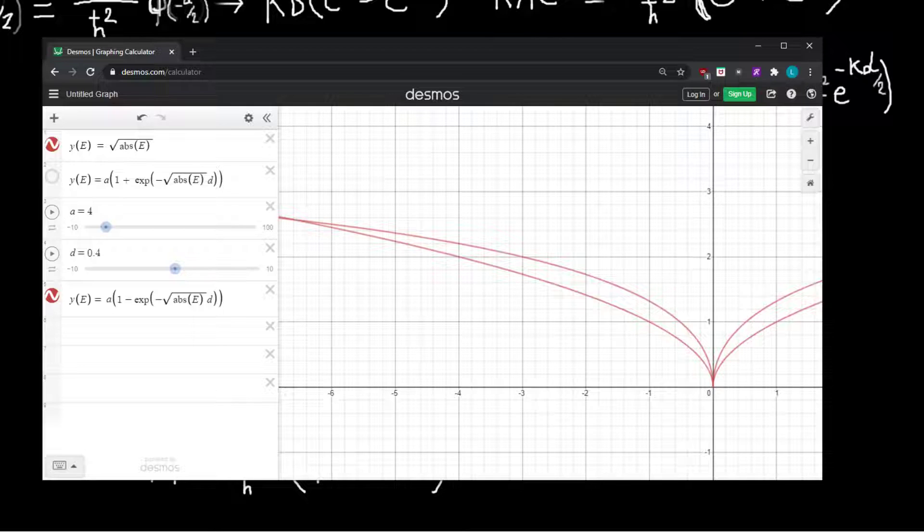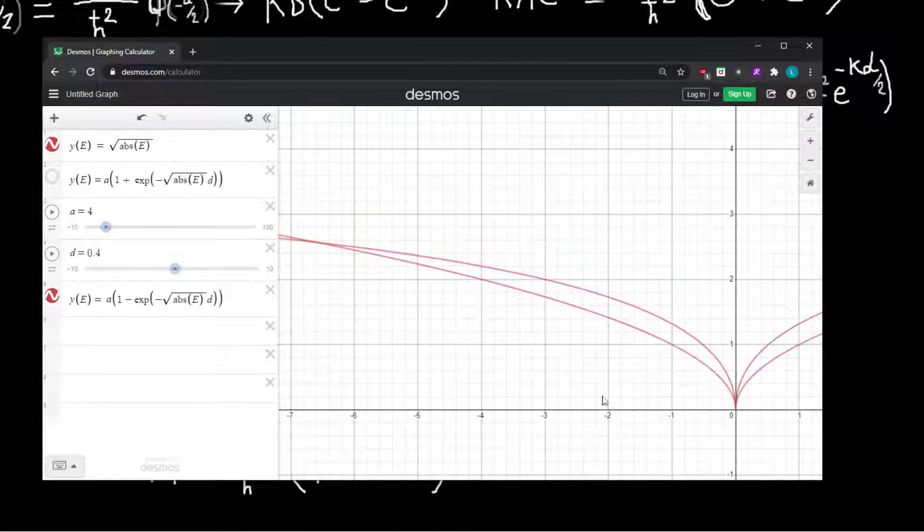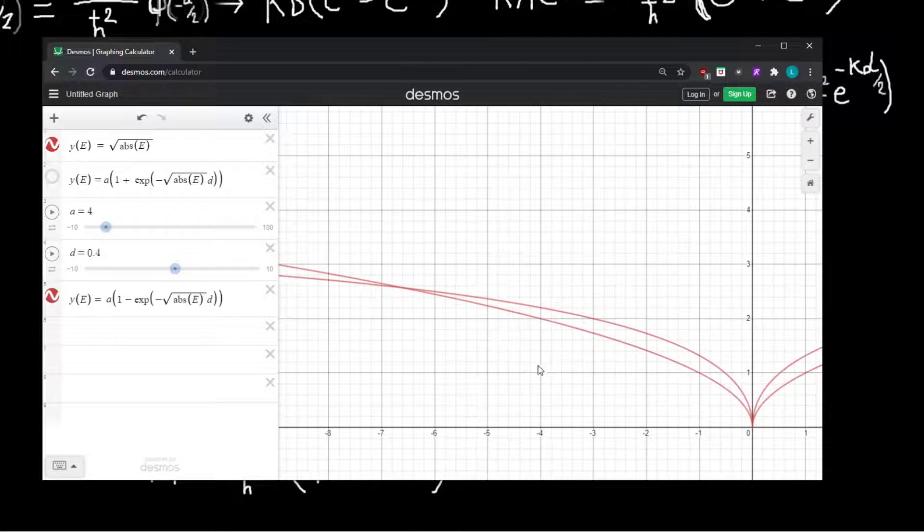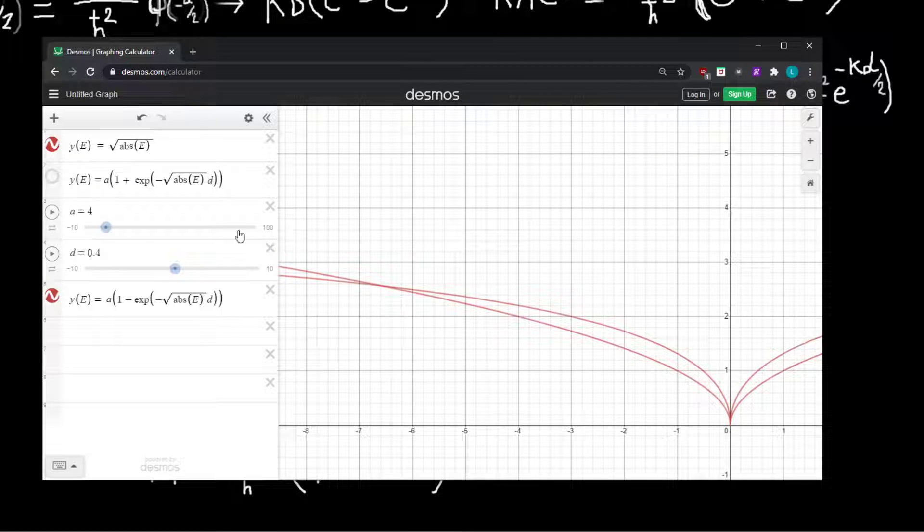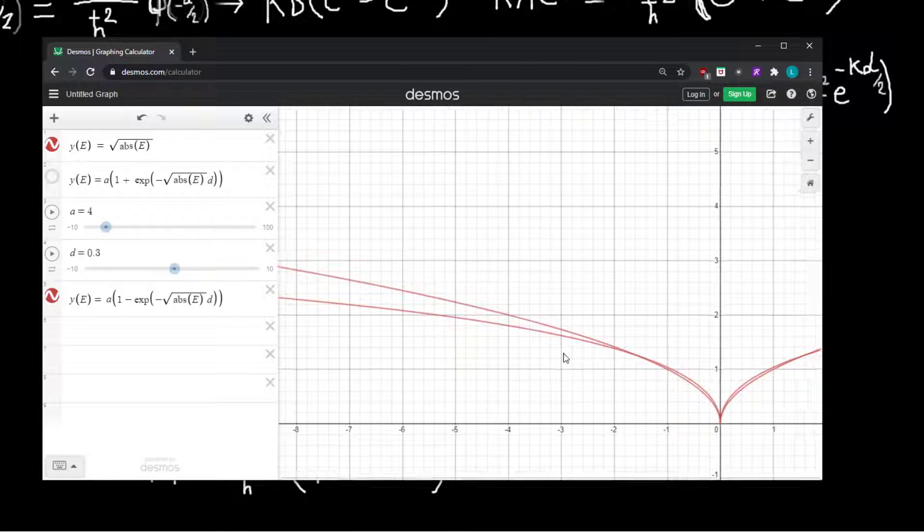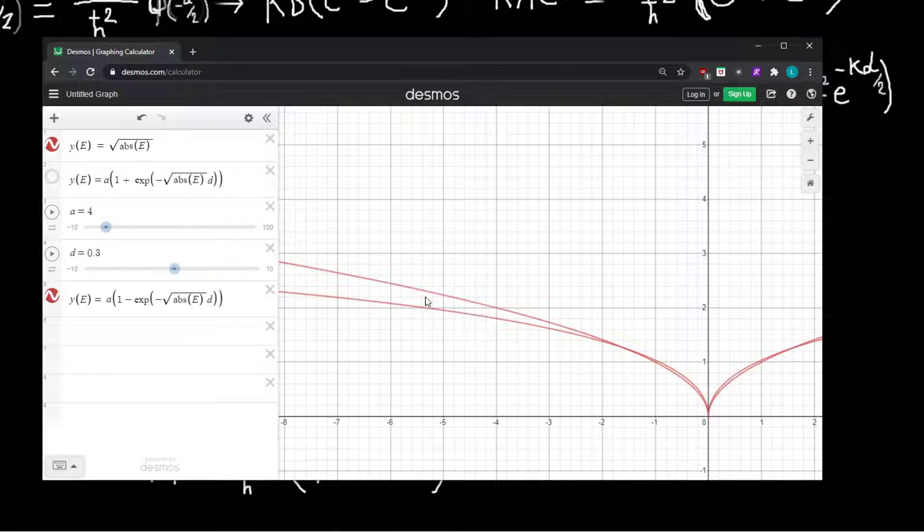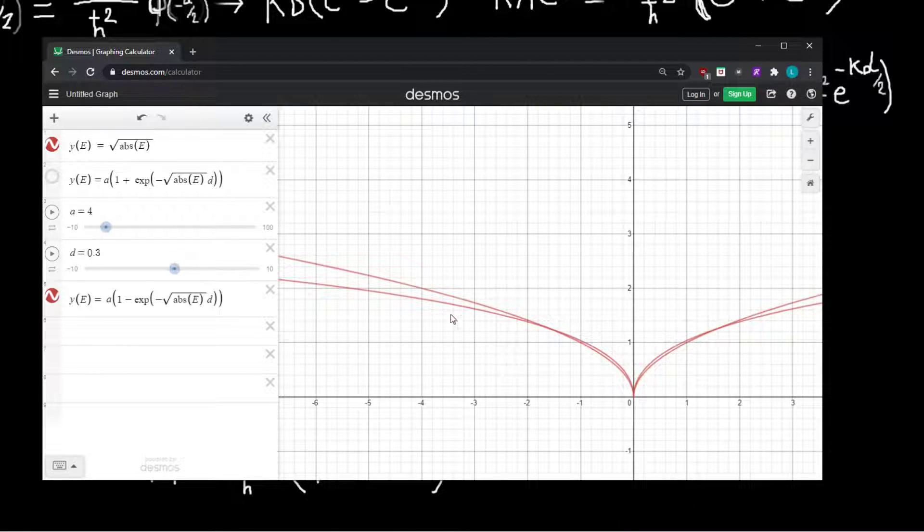And we can figure that out by looking at our graphical solution for our odd transcendental equation. And you can notice that as I make D smaller, the intersection point becomes closer and closer to zero.